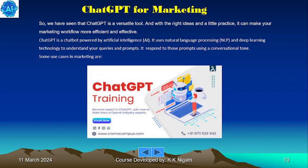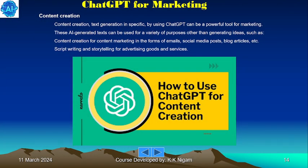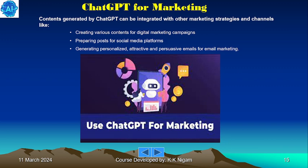Content creation is one of the key use cases in marketing. Using ChatGPT for text generation can be a powerful tool — AI-generated text can be used for content marketing in the form of emails, social media posts, and blog articles, as well as script writing and storytelling for advertising goods and services. Content generated by ChatGPT can be integrated with other marketing strategies such as digital marketing campaigns, social media posts, and personalized email marketing.